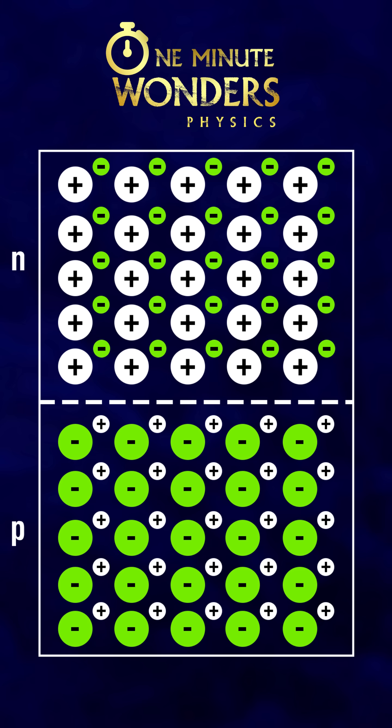Near the junction, the free electrons of the N region will be attracted by the holes of the P region and this is called diffusion.